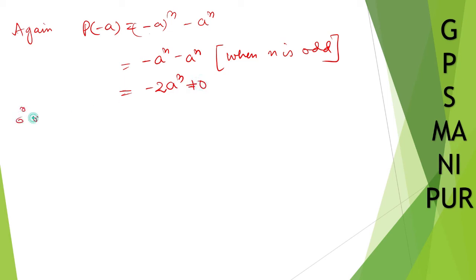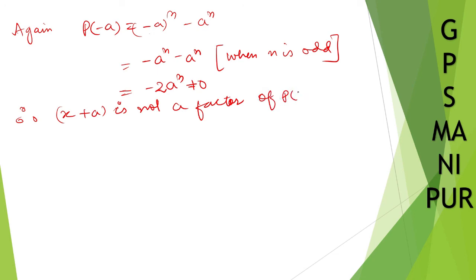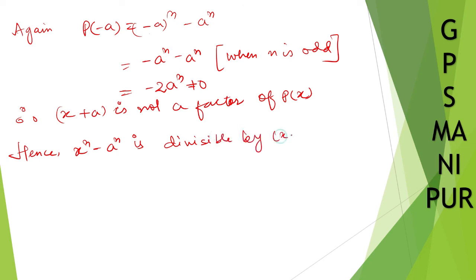Therefore x plus a is not a factor of p(x) when n is odd. Hence x^n minus a^n is divisible by x plus a only when n is even.